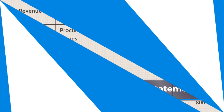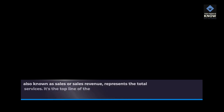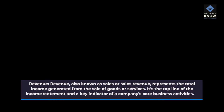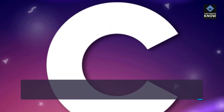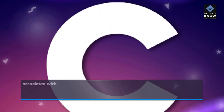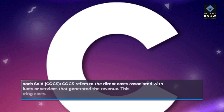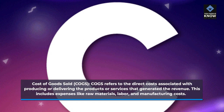Components of an income statement. Revenue, also known as sales or sales revenue, represents the total income generated from the sale of goods or services. It's the top line of the income statement and a key indicator of a company's core business activities.